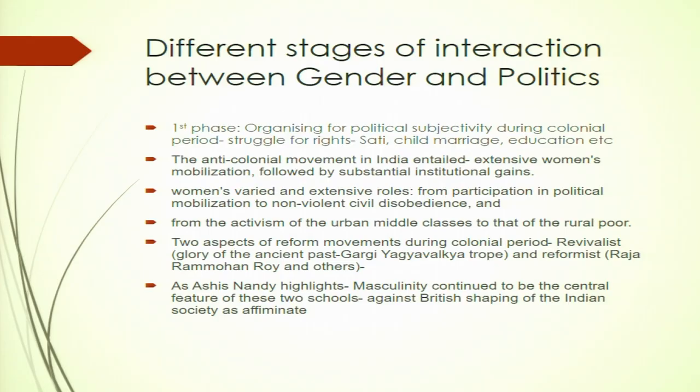In the Indian context, different stages of interaction between the idea of gender and politics have constituted the democratic processes in India. We will see how a new conception of gender politics has emerged in India. The division into different phases is to understand how this trope of gender and politics has evolved within the framework of democracy and democratic processes in India. We will also see how the democratization of women's movement and the claim for just rights by women has constituted the very idea of politics in India in different realms.